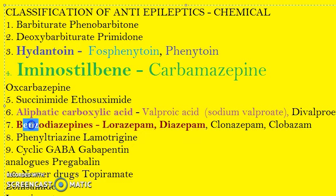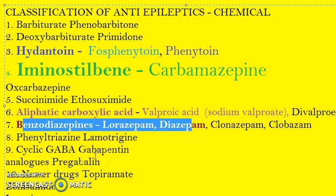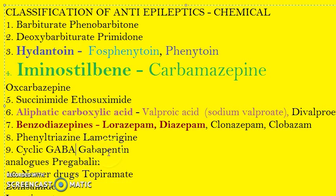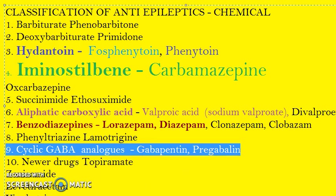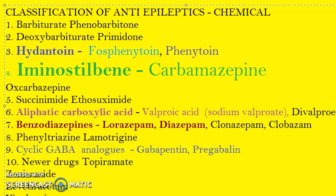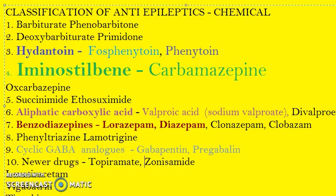Then you have cyclic GABA analogs — gabapentin and pregabalin. You should know these chemically. Then newer drugs — topiramate, zonisamide — you can note these down.